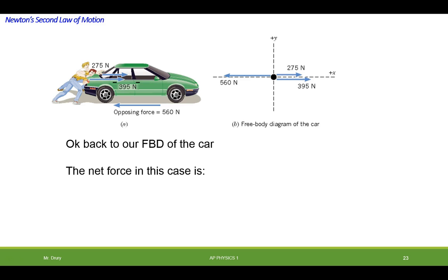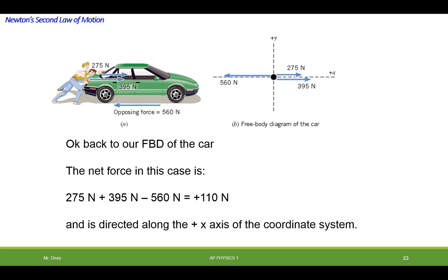So let's go back to our free body diagram of the car. What's the net force in this case? Well, you simply add all the forces, taking into account the positive direction. I assume we're going to the right positive. So the 275 and the 395 Newtons are positive, and the 560 is negative, so you have a net force of 110 Newtons. And that's acting towards the right in our coordinate system.